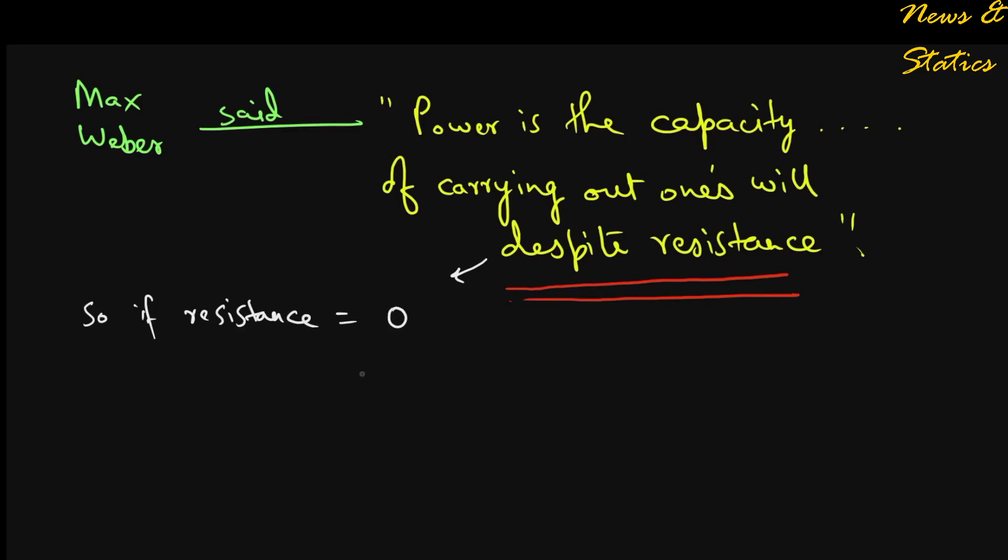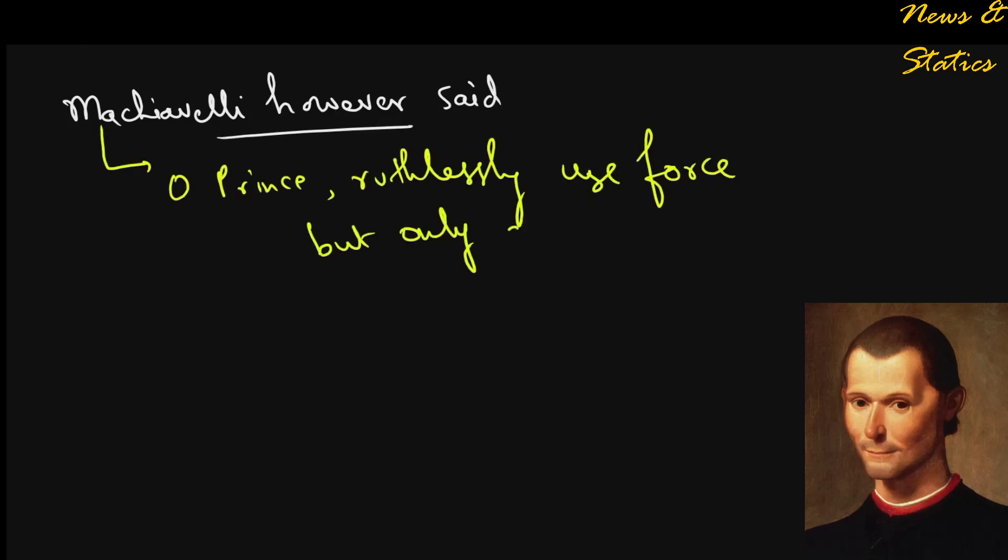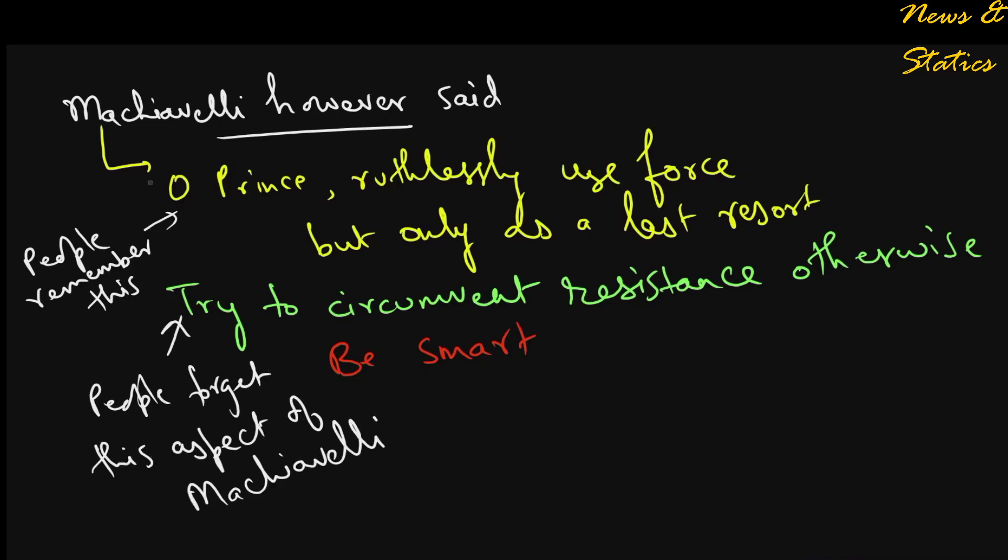In other words, he didn't consider it as an expression of power when some work is done in the absence of resistance. It was the genius of Machiavelli who advised his prince to ruthlessly use force only as a last resort and to try to be humane and circumvent any resistance otherwise. Most people seem to take note of only the former point and disregard the latter. But Machiavelli showed how anything which helps in achieving his target is in fact an expression of his power.